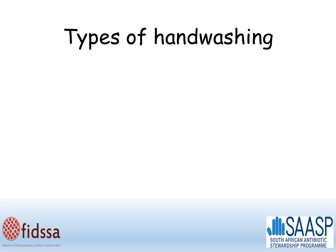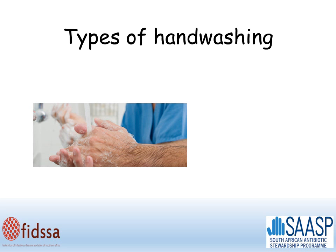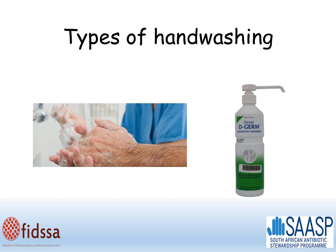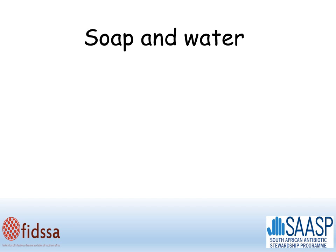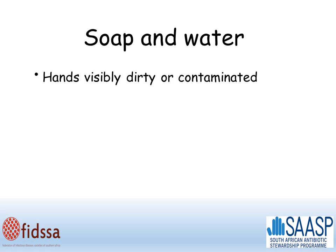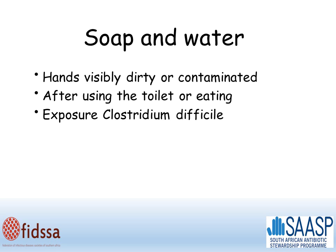There are two different types of hand washing: washing with soap and water, and washing with an alcohol hand rub, and we use them at different times. Washing with soap and water is necessary when your hands are visibly dirty or have been contaminated, after using the toilet or after eating.